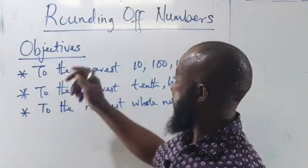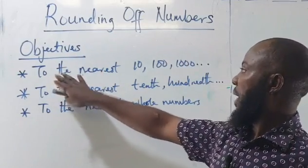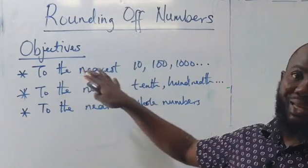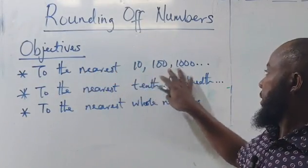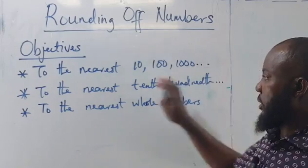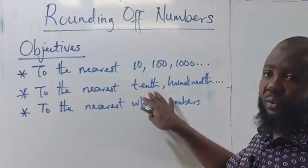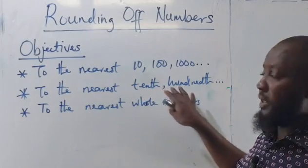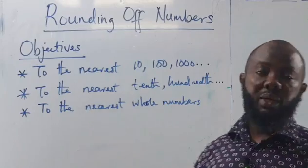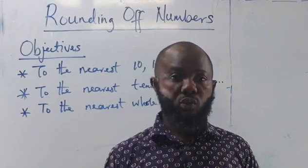The objectives for this class — we have just three. We'll be looking at how to round a number to the nearest 10th, 100th, 1000th, and so on. Then we need to look at the last one, which is rounding to the nearest whole number.